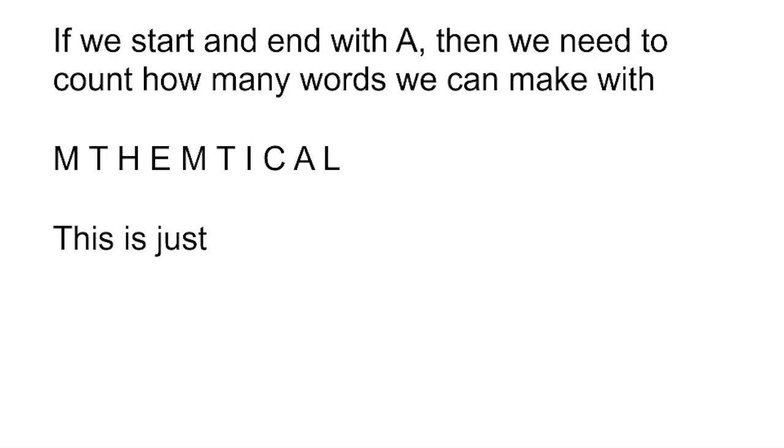If we start and end with A, it's slightly different because we've still got 10 letters left to arrange in the middle, but now there are just two M's and two T's. Note that there's a single A on its own, which is just like all the other single letters. So this time it's 10 factorial over 2 factorial 2 factorial.